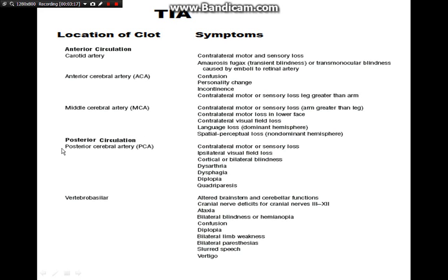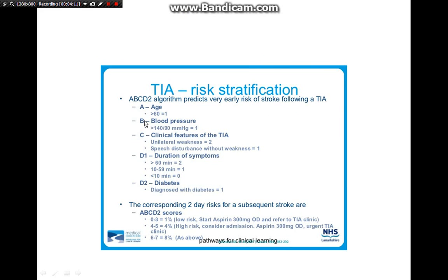In the carotid we can also get transient monocular blindness, affecting one eye. In the posterior circulation, the posterior cerebral artery causes sensory loss and ipsilateral visual field loss, while above that level it is contralateral. There can also be dysarthria, dysphagia, diplopia, and cord paresis. For vertebrobasilar involvement affecting the cerebellum, you can have ataxia, and cranial nerves 3 to 12 may be involved, causing confusion, bilateral limb weakness, bilateral paresthesia, slurred speech, and vertigo.